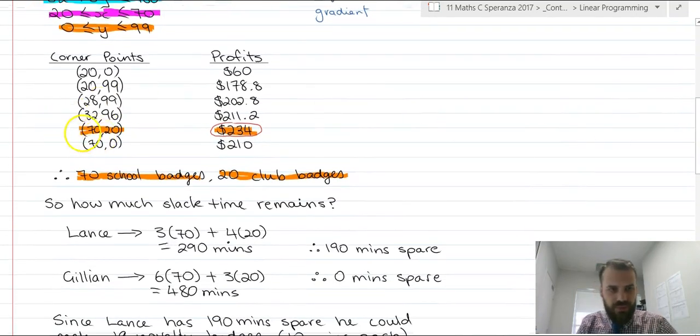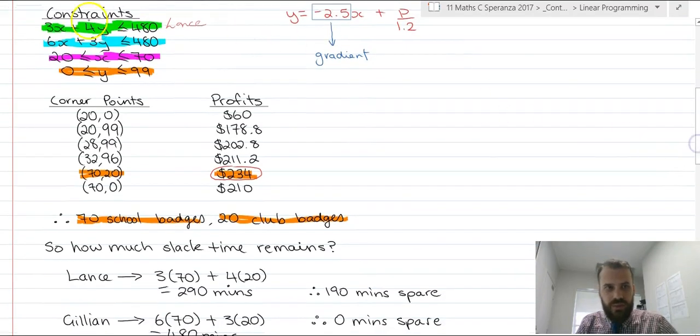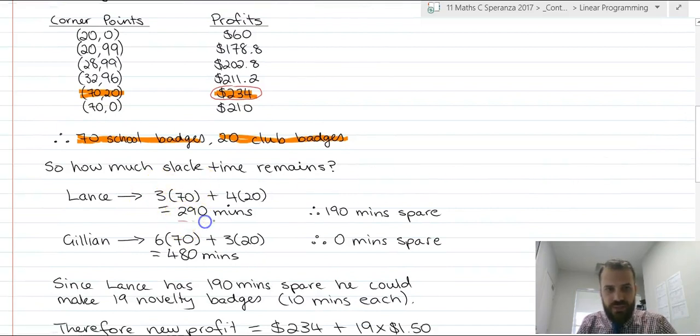If our maximum profit is reached at 70X and 20Y, we can sub 70 in for our X and 20 in for our Y into that equation. Because what that equation really says is Lance's time is equal to three times this and four times this. So that takes 290 minutes of work. That means that Lance has 480 minutes in a day. So he has 190 minutes to spare. 480 minus 290 equals 190. He has 190 minutes to spare.